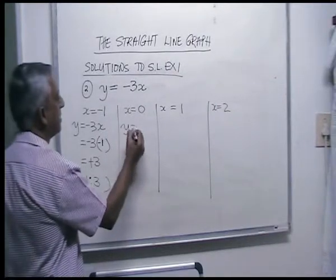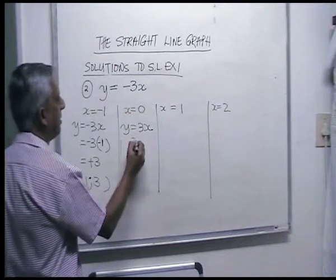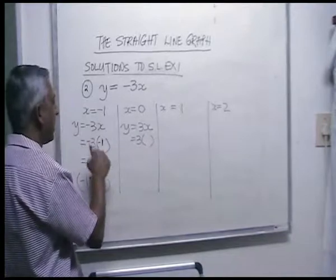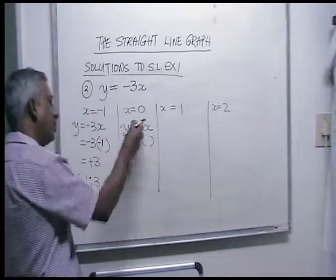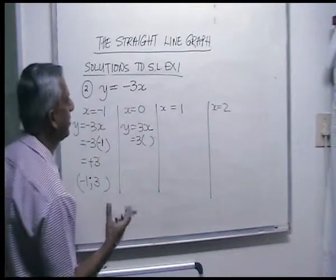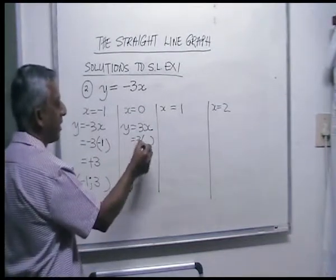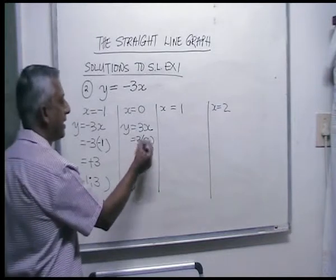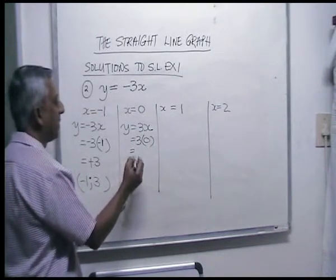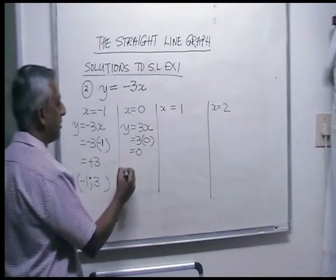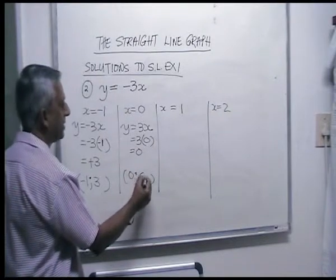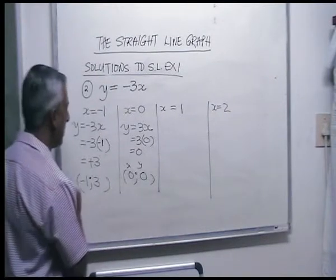For x is zero: y is equal to minus three times zero. It's a very good habit to write a bracket first, then put the number in — the bracket tells you clearly to multiply. Three times zero is zero, so your ordered pair here is zero, zero.